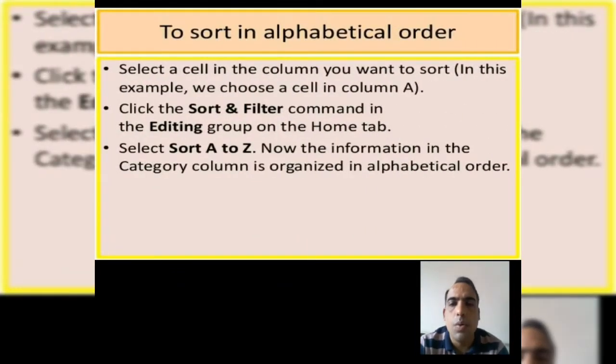Now I will explain how to sort in alphabetical order. First step, select a cell in the column which you want to sort. Second step, click the sort and filter command in the editing group on the home tab.